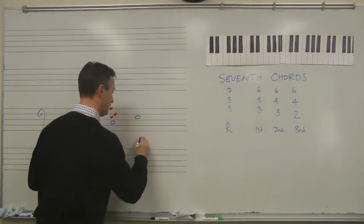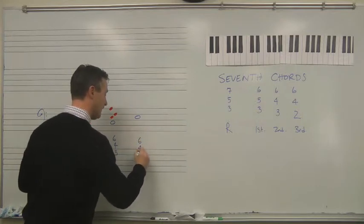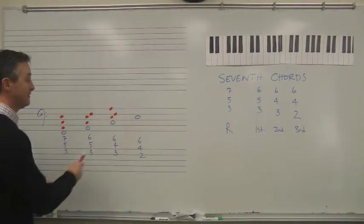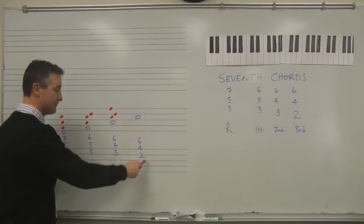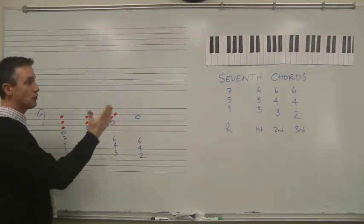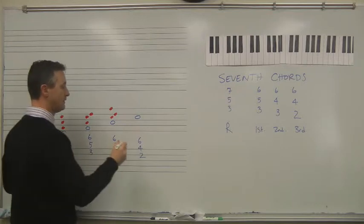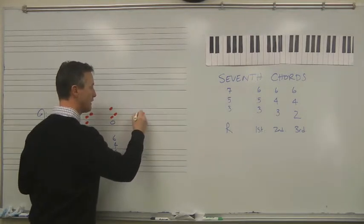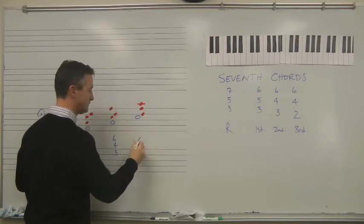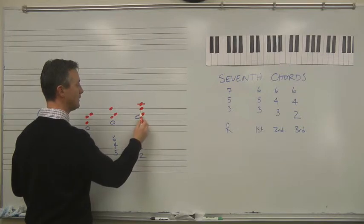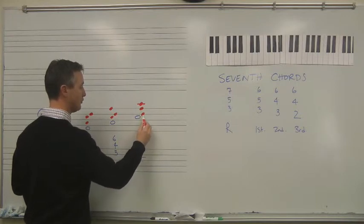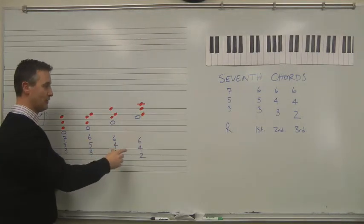Same principle. I can start now from another pitch. In this case, this is the seventh: F, A, C, E. The seventh is now in the bass. And if I have 6, 4, 2 under any note, it will create a third inversion. 1, 2, 1, 2, 3, 4. 1, 2, 3, 4, 5, 6. 1, 2, 3, 4, 5, 6. 1, 2, 3, 4, 1, 2. I think I miscounted that on one of those. It's 6, 4, 2.